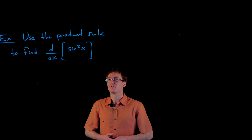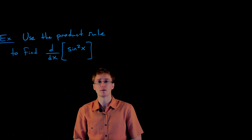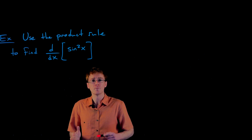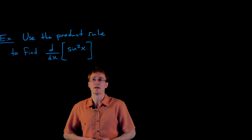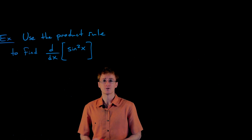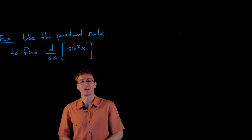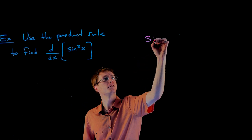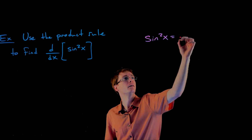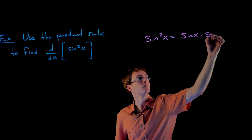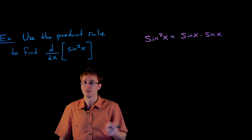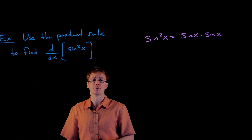In this example, we are asked to find the first derivative of our sine squared function, and we want to use the product rule. In a later section we'll learn the chain rule, which will be quicker for powers of trig functions — but for now, we use the product rule. To apply it, we think of sine squared of x as sine of x times sine of x, viewing it as a product of two functions.